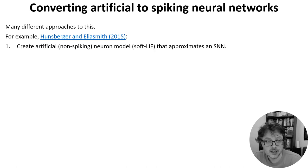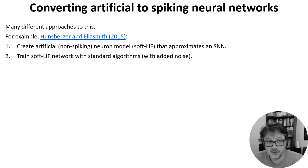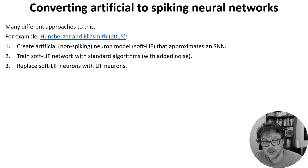The first starts by creating a non-spiking artificial neuron called a soft LIF that approximates the input output behavior of a spiking neuron. You then train this soft LIF network with standard algorithms, possibly adding training noise to make it more noise robust. Then just replace those soft LIF neurons with real LIF neurons and it works fairly well.